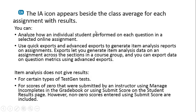The IA icon appears beside the class average for each assignment with results. You can analyze how an individual student performed on each question in a selected assignment, or use quick exports and advanced exports to generate item analysis reports on assignments for your class. Exports let you generate the data on an assignment across sections in a course group as well, and you can export data on question metrics.